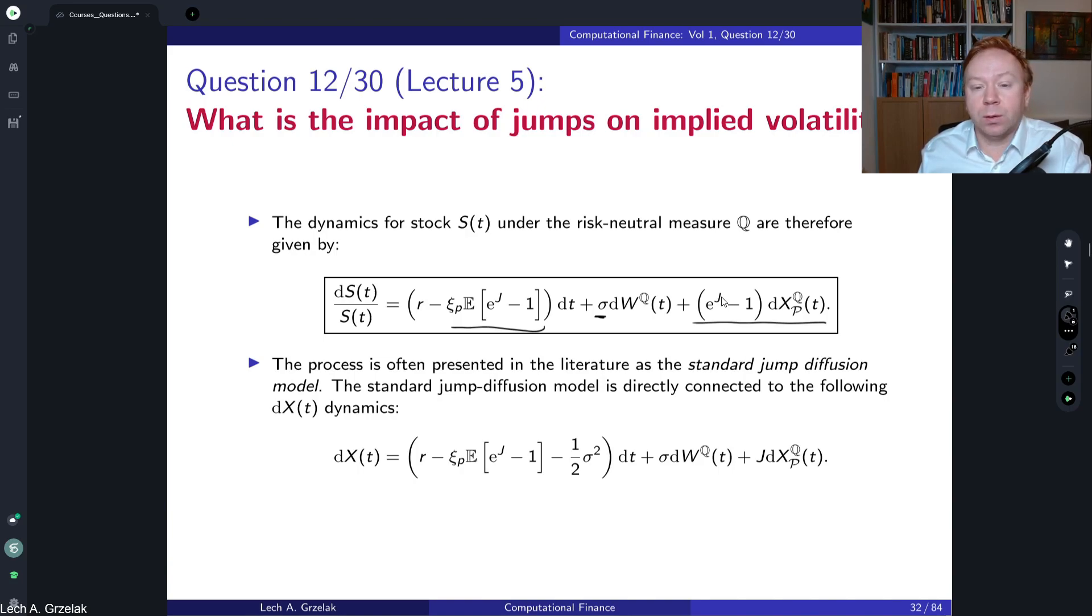There are different choices for jump j. The standard approach is to take the Merton's model where j is driven by a normal distribution with some mean and variance, standard deviation sigma. Then we have three additional parameters in the framework: the Poisson process is driven by the intensity, and we have two parameters corresponding to the jump magnitude. If we have Black-Scholes model we have only sigma, but if we add jumps we have additional three parameters in the standard Merton's model.